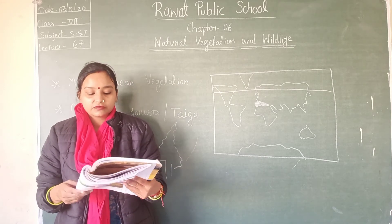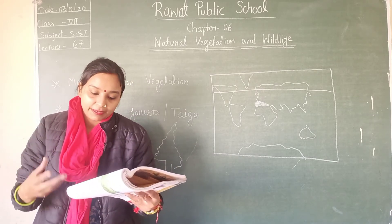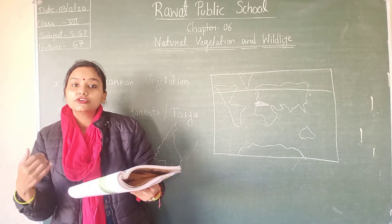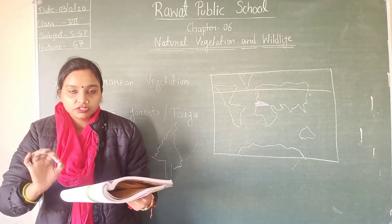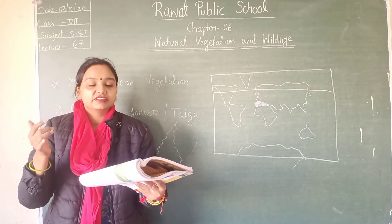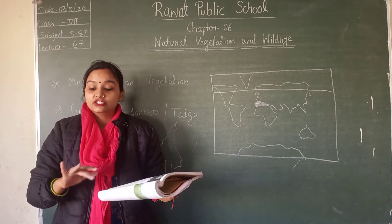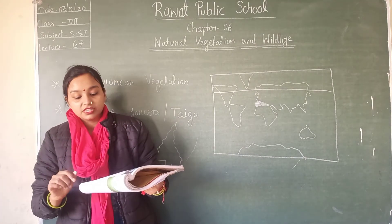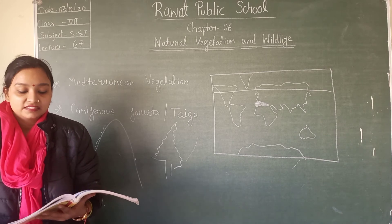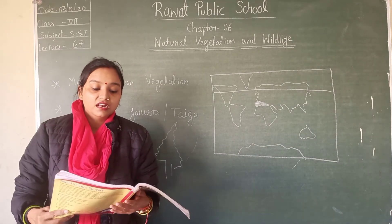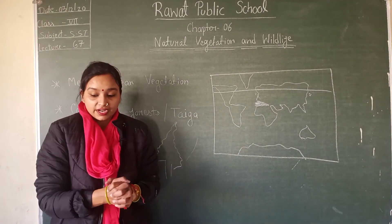The softwood of coniferous forests is used for making paper pulp, for manufacturing paper and newsprint. Softwoods are also used for making matchboxes, packaging boxes, plywood for furniture, doors, and sports goods. However, this has resulted in large-scale lumbering and destruction of these forests by the advanced countries in which these forests are located.